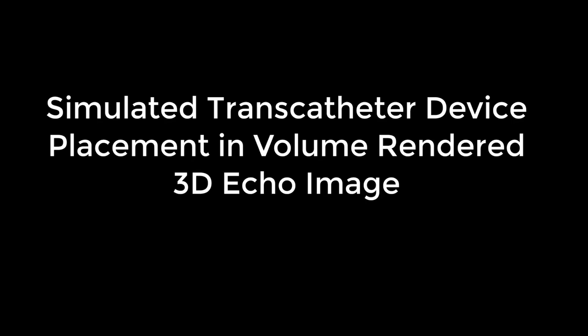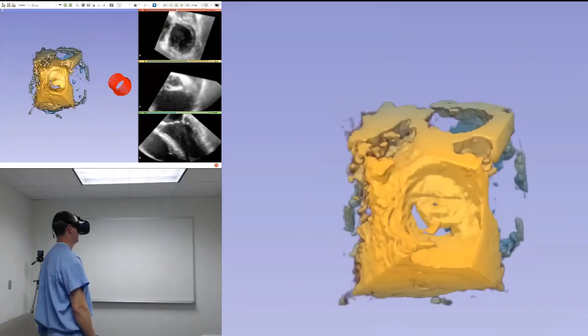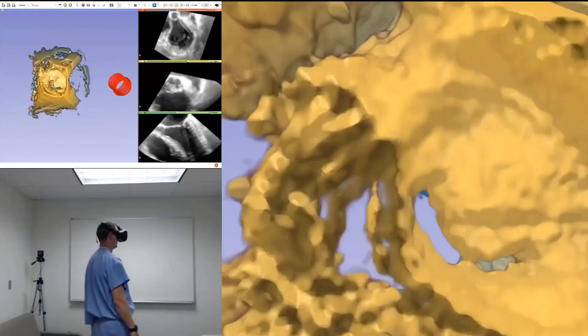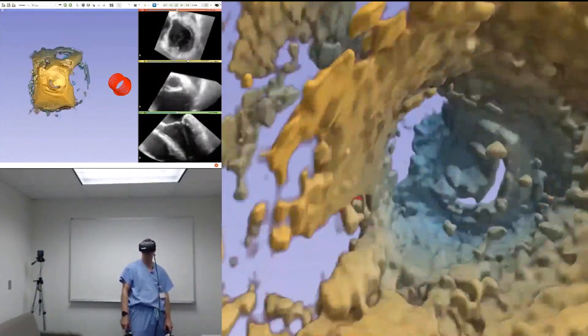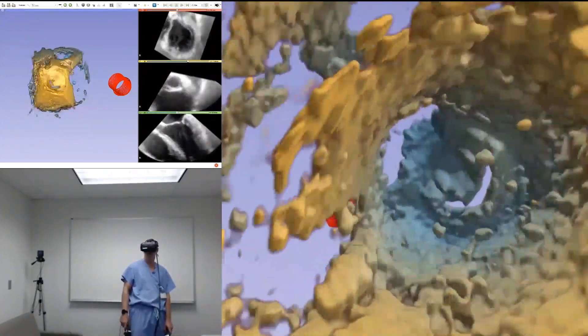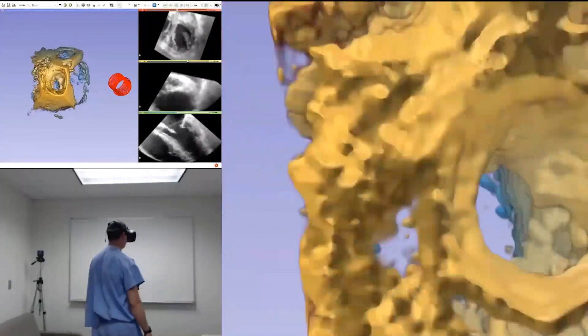Next, we demonstrate device placement into volume rendered 3D echo images of an adolescent patient with rheumatic mitral valve disease in order to demonstrate the potential for use of these methods in native volume rendered images, as well as the potential for application to transcatheter mitral valve therapies.